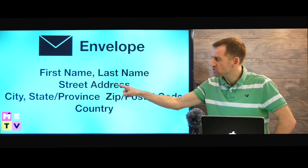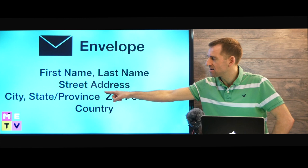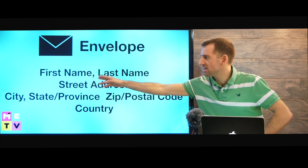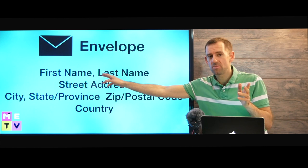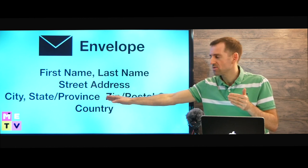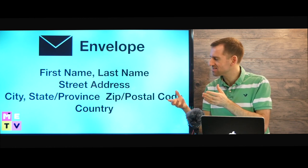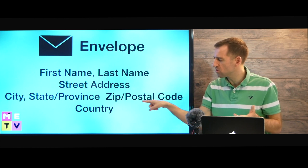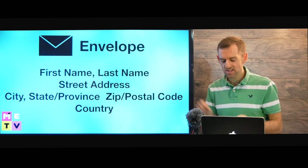Here's how you address the envelope: you put first name, then last name, then street address, then city, and then a comma, followed by the state or province. There doesn't need to be a comma between first and last name, but there should be a comma between the city and the state or province. The US has states; Canada has provinces. Then you put a space and the zip code or postal code, then the country.